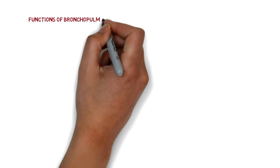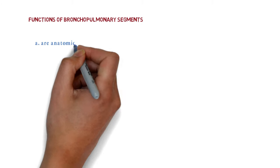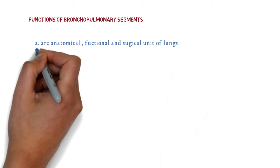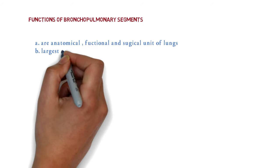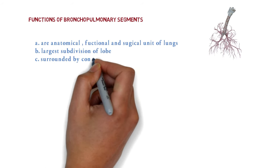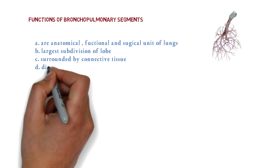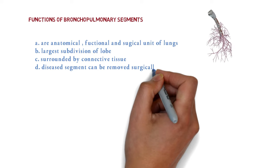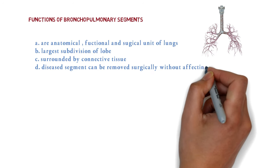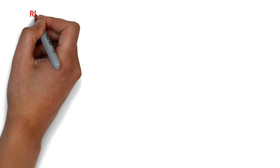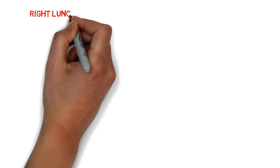Bronchopulmonary segments are the anatomical, functional, and surgical units of the lungs. A bronchopulmonary segment is the largest subdivision of a lobe and is surrounded by connective tissue. Their surgical importance is that a diseased segment can be removed without affecting the function of other segments.